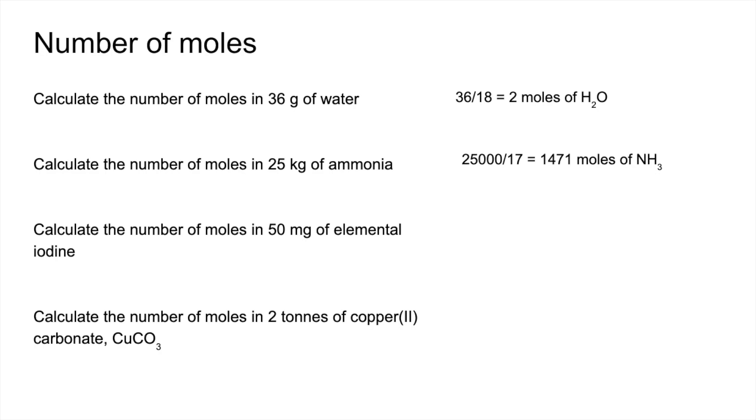So for the third one, there's a couple of traps in this one. We've got the mass in milligrams, and we're told it's elemental iodine. So we're expected to remember that iodine is a diatomic molecule. So I hope you've remembered to double the MR of iodine. So 50 milligrams is 0.05 grams, and the MR of I2 is 253.8. So that comes out of that many moles of I2.